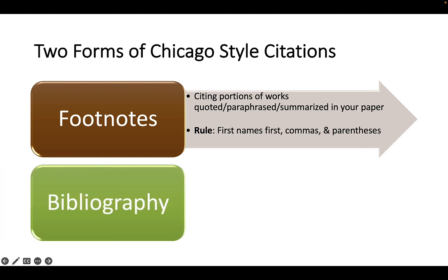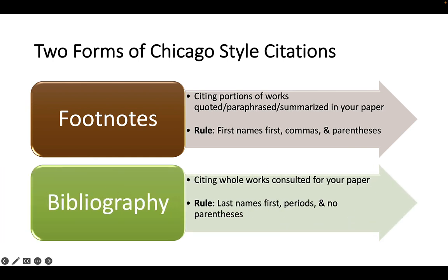For citations in bibliographies, you're citing the whole work, not just a specific page. Citations look different in bibliographies — last names come first, because bibliographies are organized alphabetically by author's last name. In bibliographies, citations always have more periods and fewer parentheses. So remember: last names first, periods, and fewer parentheses for a bibliography.